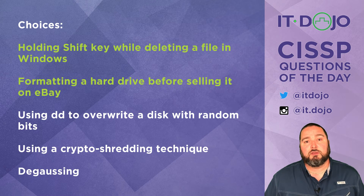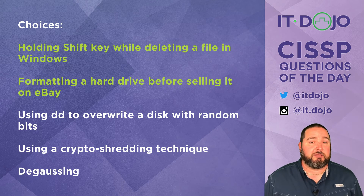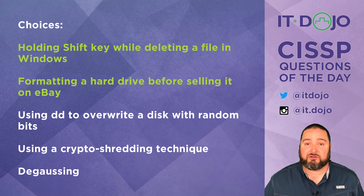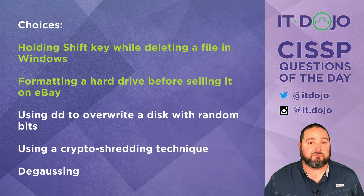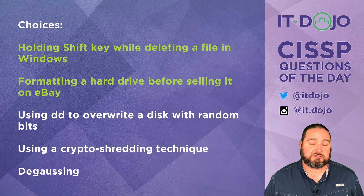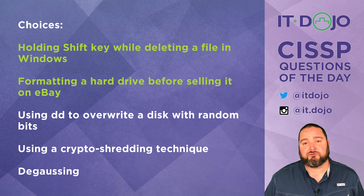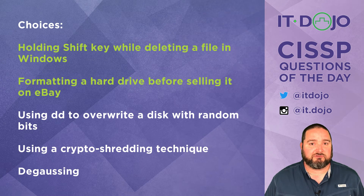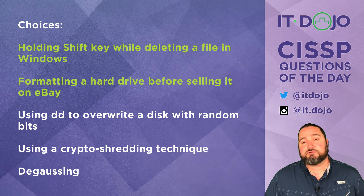The second option says that if you format a hard drive before selling it on eBay, you won't have remnants concerns — no, you absolutely still will. Formatting doesn't actually remove any of the data; it just rewrites the file system. Think of it like rewriting the table of contents of a book without changing any of the actual pages. Formatting a drive and shipping it out for sale on eBay is a terrible idea, and more than once that has led to people having information out there they did not intend to share.